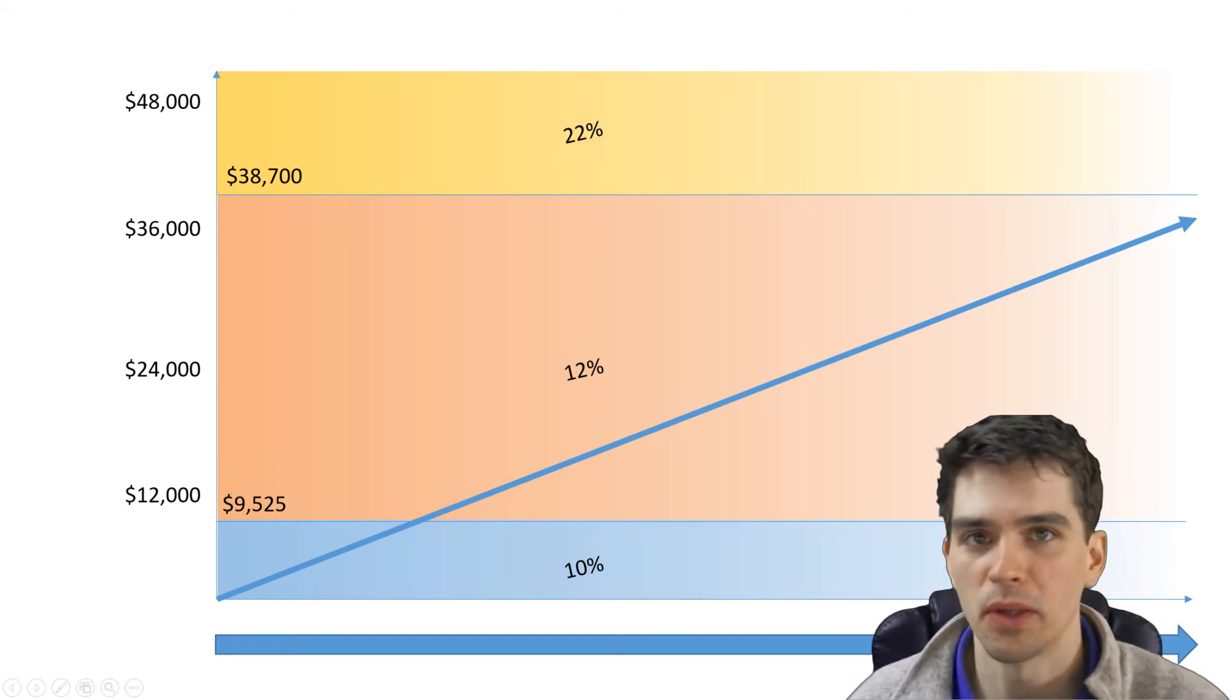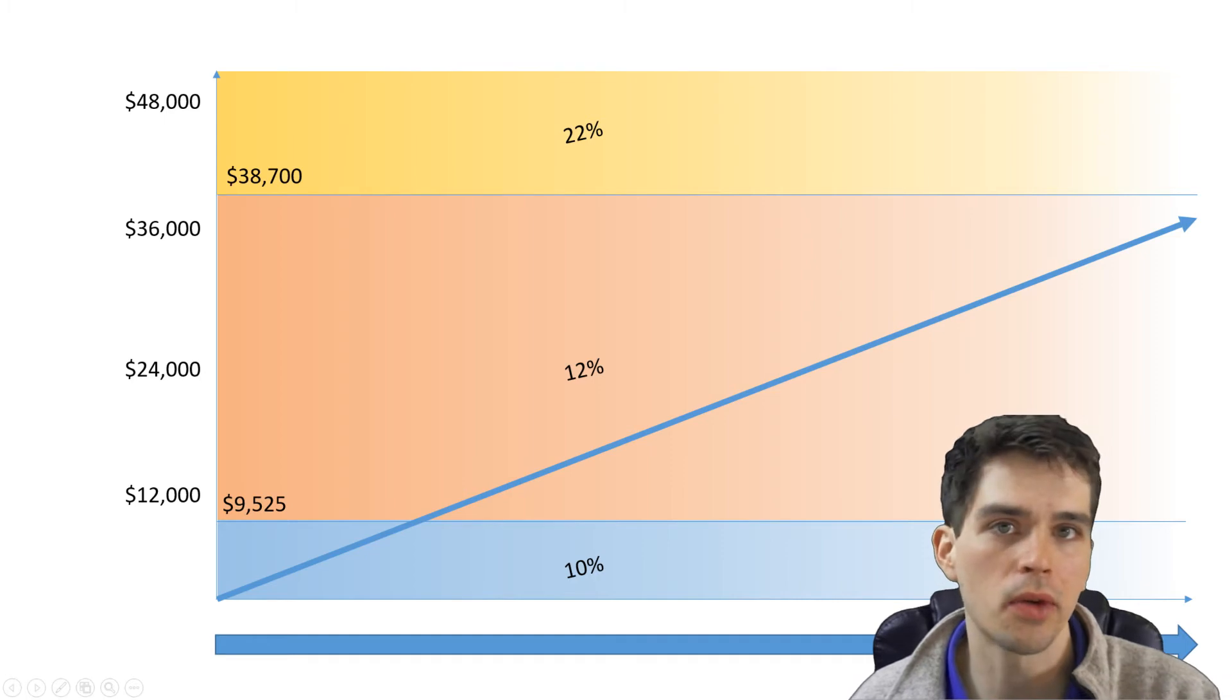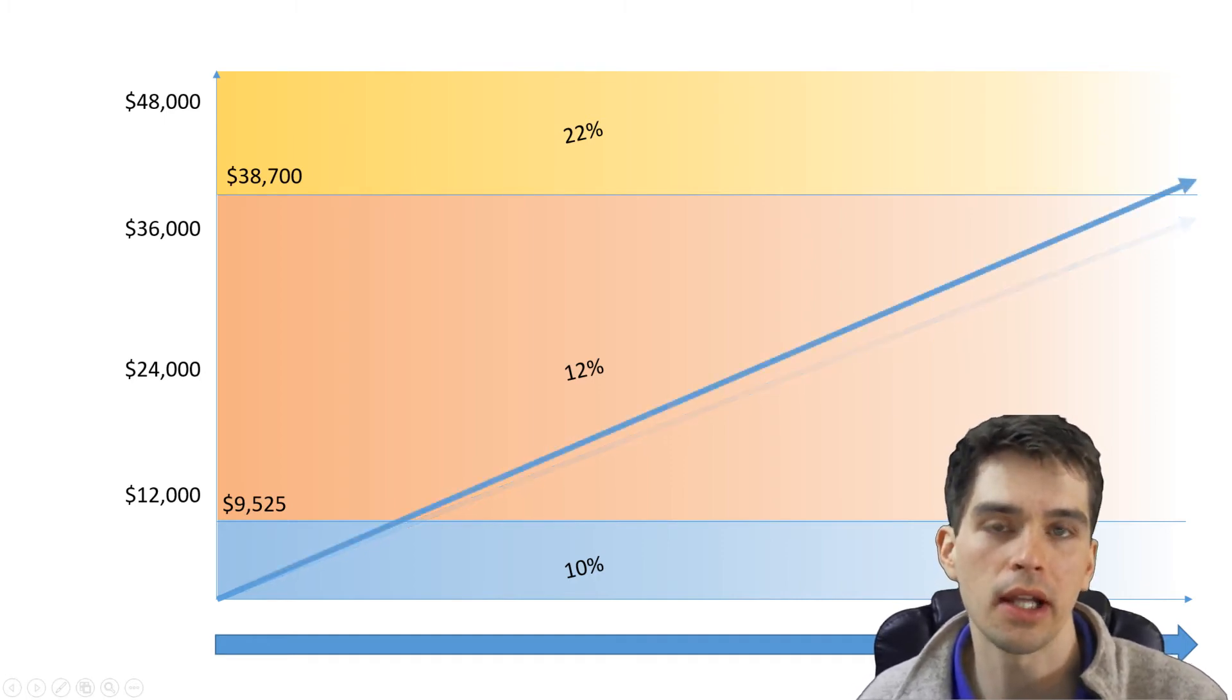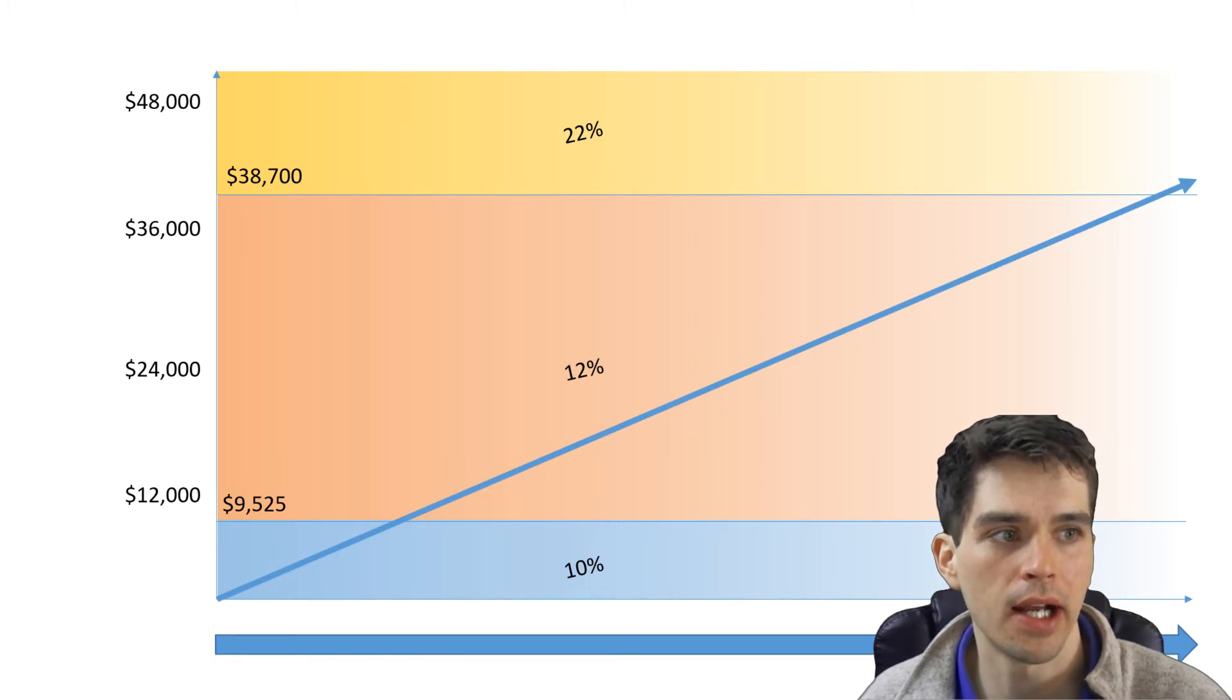So what this person that we all know and love is saying is they don't want a raise because if they made $40,000 a year it would look like this. Here the line ends at the very end of the year up around $40,000 which is above the 22% tax bracket threshold of $38,700.